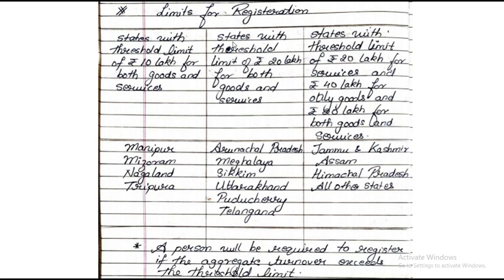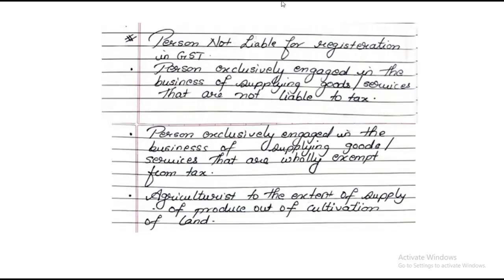To summarize: MMNT states — 10 lakhs; Arunachal Pradesh, Meghalaya, Sikkim, Uttarakhand, Puducherry, Telangana — 20 lakhs; rest of India — 20 lakhs for services, 40 lakhs for goods only, and 20 lakhs for both goods and services. A person is required to register if the aggregate turnover exceeds this threshold limit — only when it goes beyond that number is the person required to register under GST.